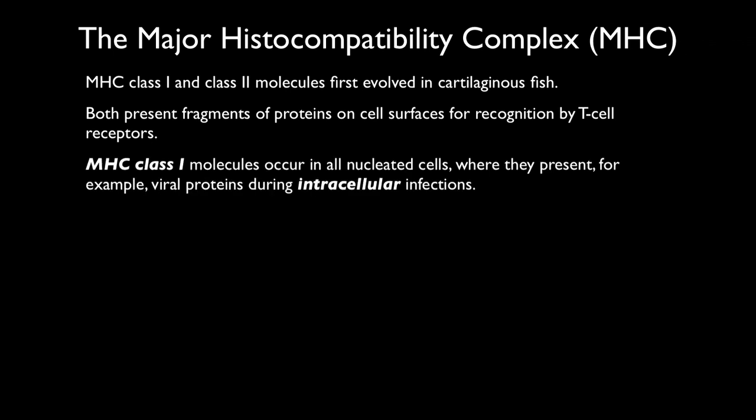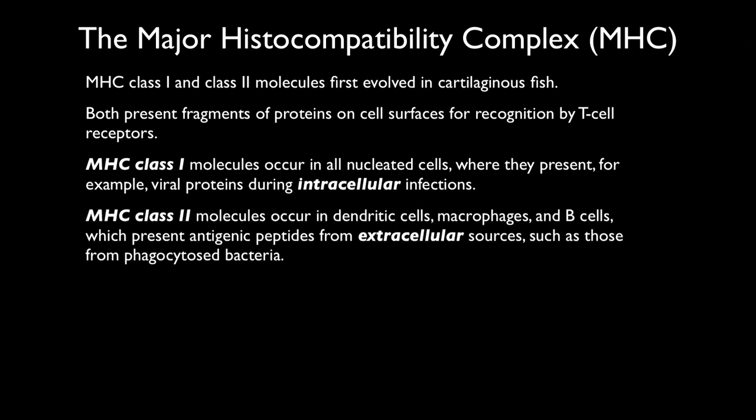MHC class I molecules occur in all nucleated cells, where they present viral proteins during intracellular infections. Class II molecules occur in dendritic cells, macrophages, and B cells — these are the cells that present antigenic peptides from extracellular sources, such as those from phagocytosed bacteria.